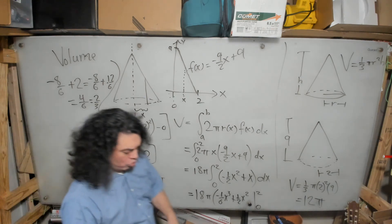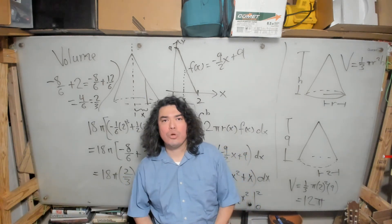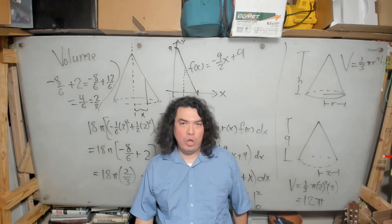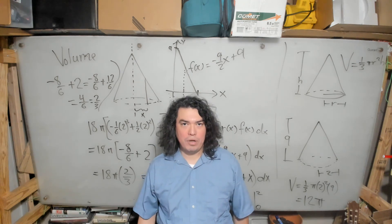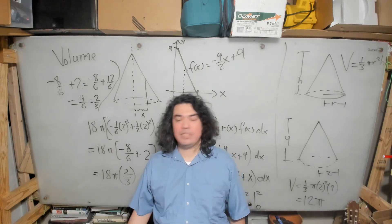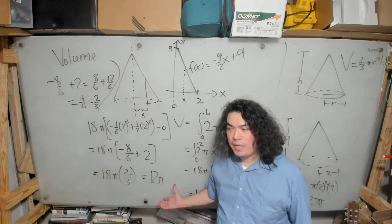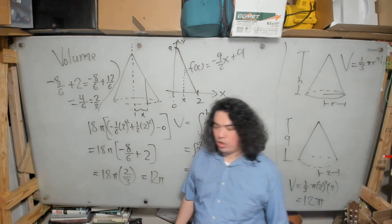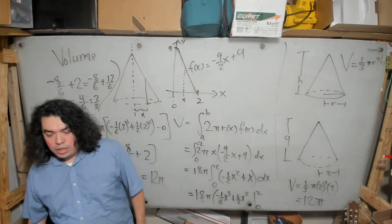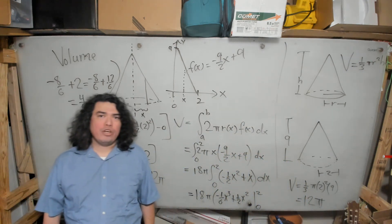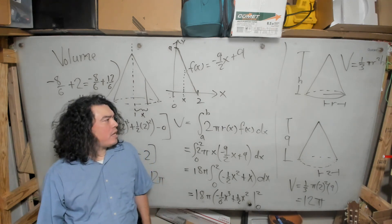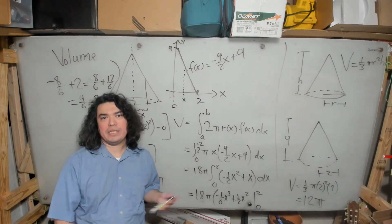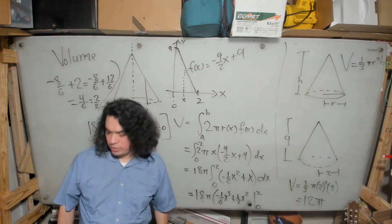This shows that the cylindrical shell method also works to solve this problem, giving exactly the expected answer for the volume of this cone: 12π. I hope you've enjoyed this example, and we'll work out more careful examples like this in a few moments.